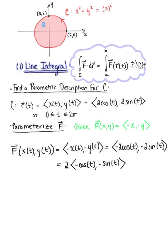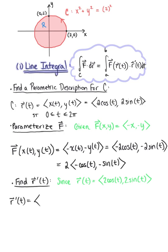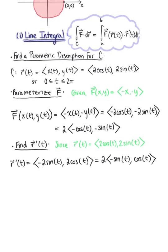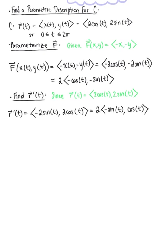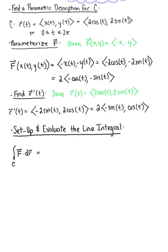We use the parametric representation of curve C to find the tangent vector r′(t), which has components (−2sin(t), 2cos(t)). Pulling out the scalar multiple, this is 2 times (−sin(t), cos(t)). We are now ready to set up the line integral: the integral from 0 to 2π of the parametrized vector field dotted with the tangent vector.